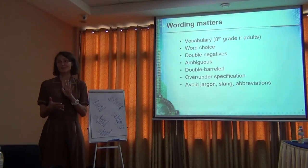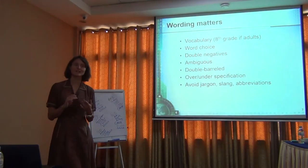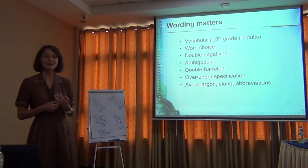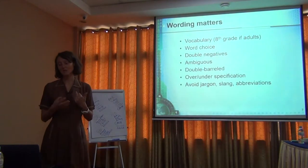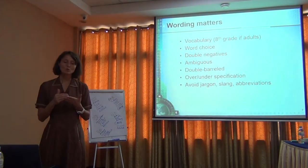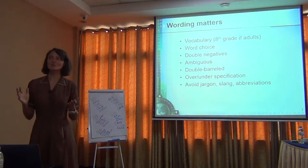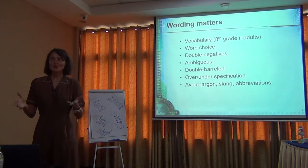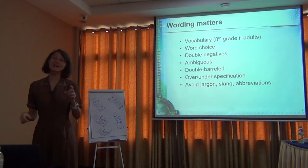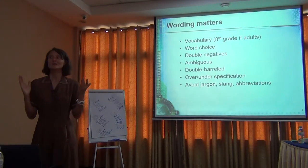The wording of questions matters greatly. If you're surveying adults, eighth-grade vocabulary is the maximum level you should use — otherwise you might get nonsense answers. You have to pick words people understand; you would never put 'ecosystem services' in a survey for the general public because they don't know what that is. You'd have to spell out something like 'benefits we derive from nature' and do it on every single page of the survey — or you'd guarantee weird results.